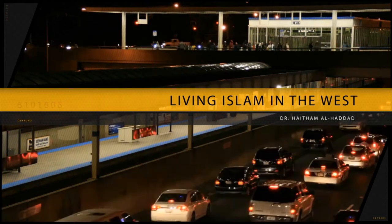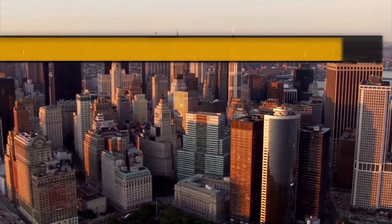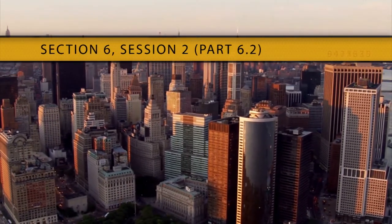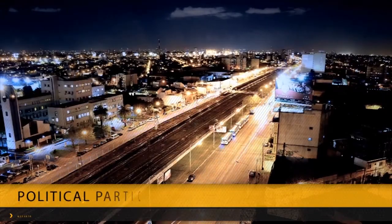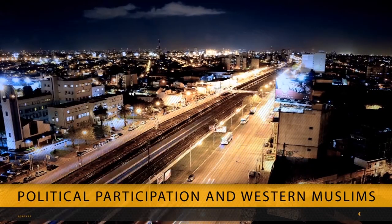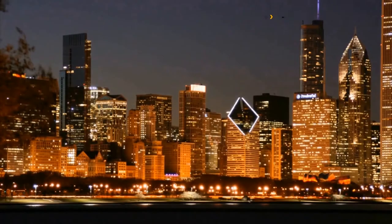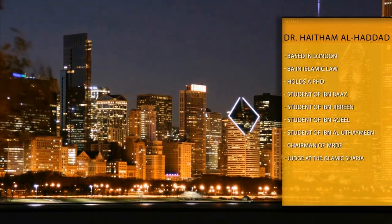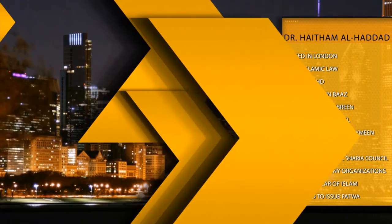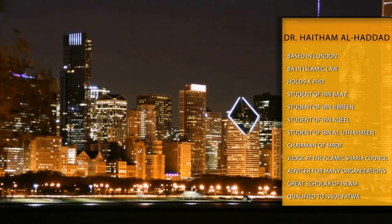One of the most important Islamic principles is to establish the unity of the Ummah of Muhammad, which is one of the features of the Islamic State — that the whole Ummah is united under one Khalifa. Understanding those features will place us in a better position to discuss political involvement.